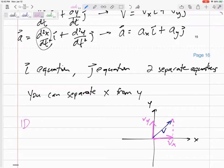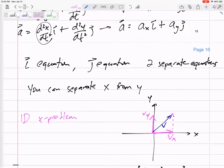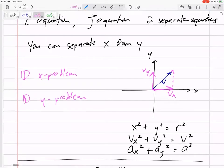I'm going to kind of think of this as a 1D X problem. What is my X acceleration? What is my X velocity? What's my initial X position, my final X position? And then I'm going to think about my 1D Y problem. What is my Y acceleration, my Y velocity, my Y position?